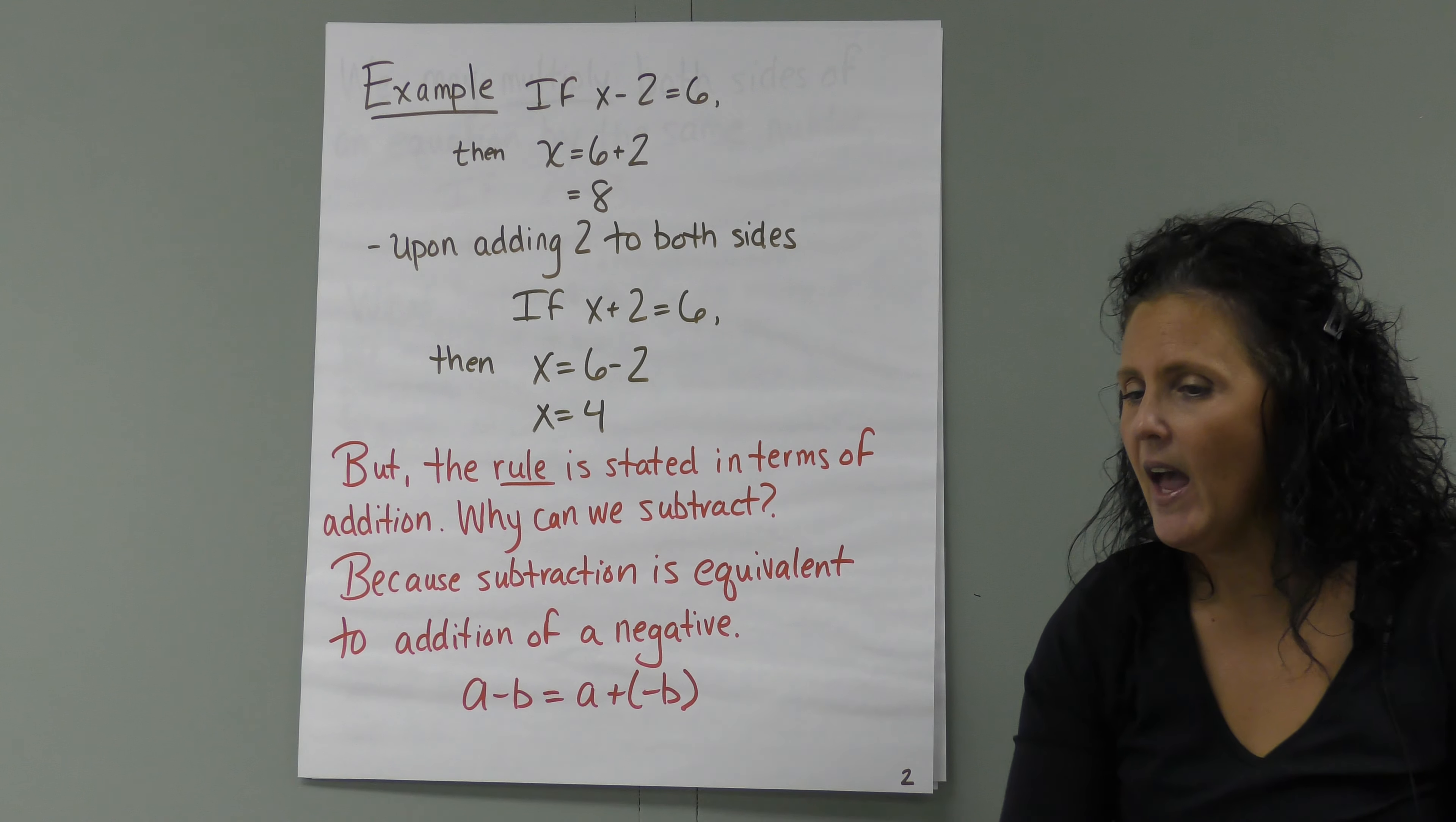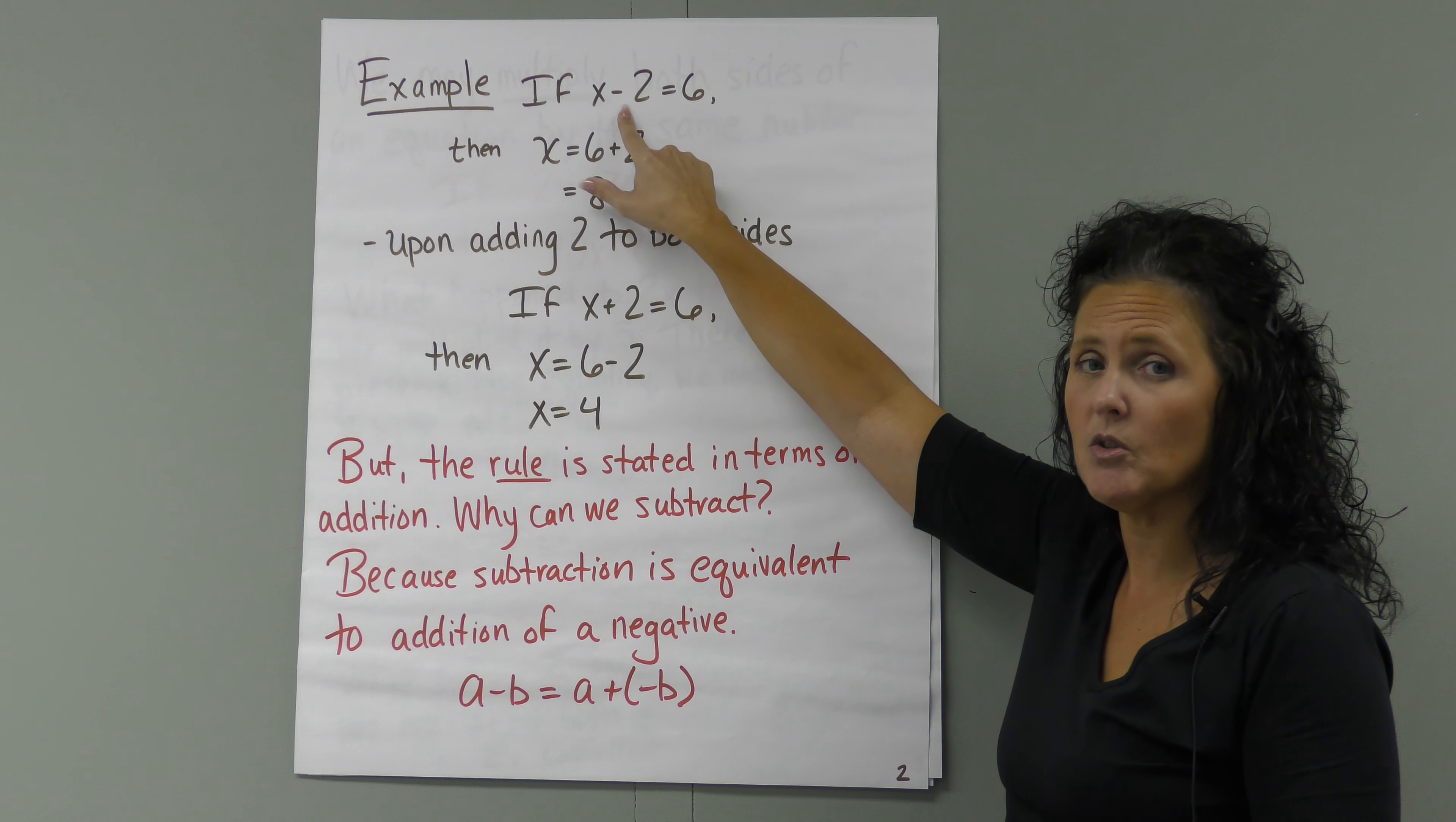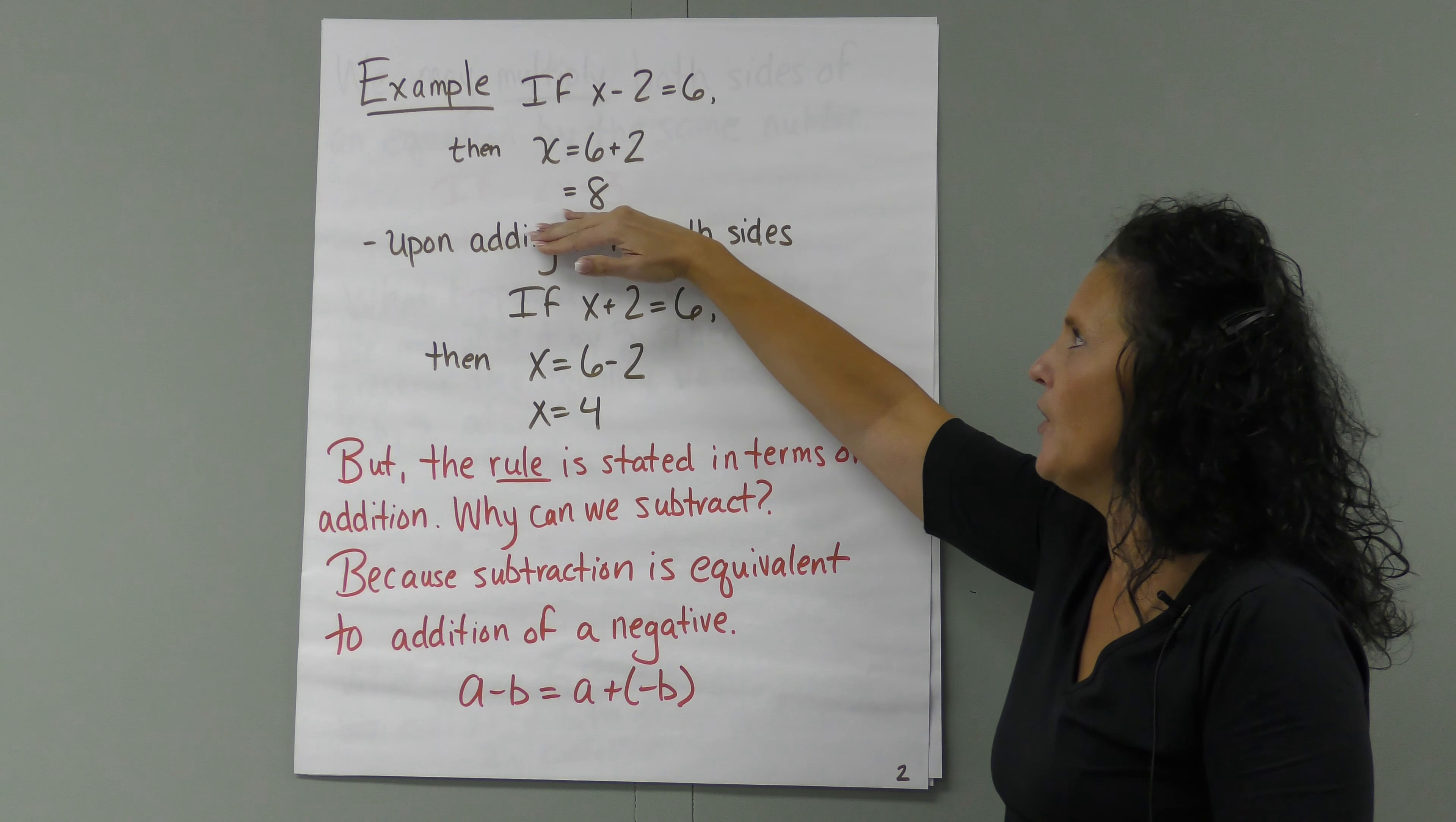Example: If X minus 2 is equal to 6, then X is equal to 6 plus 2. So X is equal to 8. What we do here, if we subtracted 2 from this side to get 0, we have to do the inverse, just as we looked at in the previous video. So we add 2. If we add 2 to this side, we have to add 2 to this side. Then we have X equals 6 plus 2, which equals 8. So we solved for X.